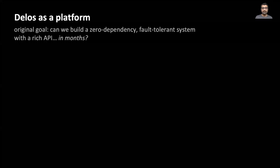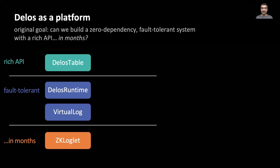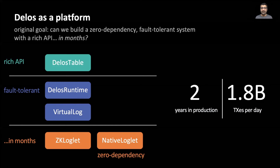In summary, our original goal was to build a zero-dependency fault-tolerant system with a rich API, and to do it in months. We achieved the rich API via the Delos table layer, fault tolerance via a shared log design, and we had production in months by using ZooKeeper as our ordering mechanism. Later, we got to zero-dependency by building and deploying the native loglet. So virtual consensus in Delos allowed us to achieve our original goal with a lot of success.